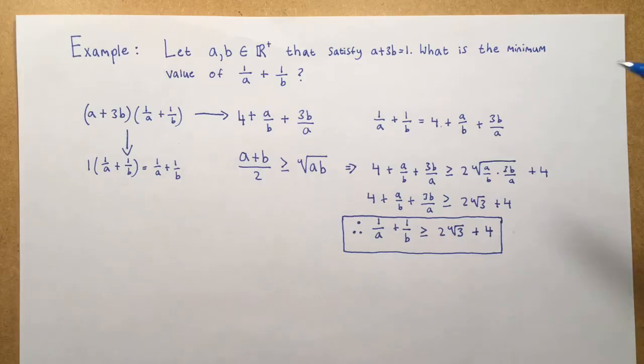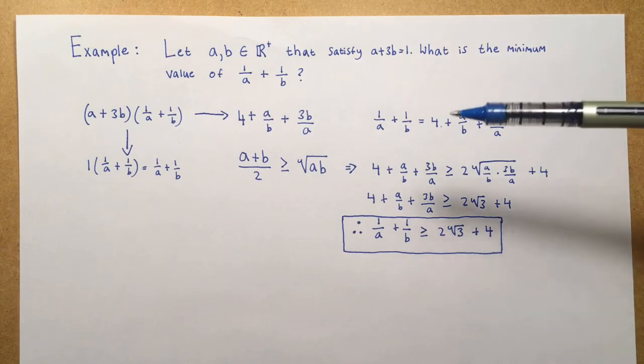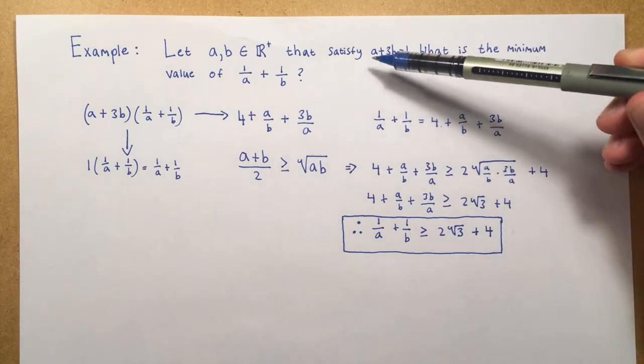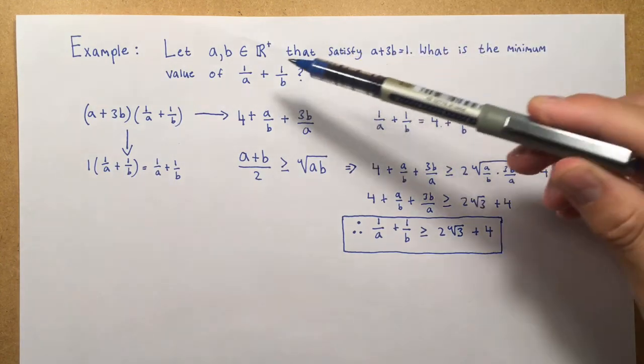So I would just like to go through a very quick example of where the AM-GM inequality could be used to solve a quick problem. Let a and b be positive real numbers such that they satisfy a plus 3b is equal to 1. We want to find the minimum value of 1 over a plus 1 over b. Let's just play around with the algebra and get a feel for the problem. Let's say choose to multiply this expression by this expression.